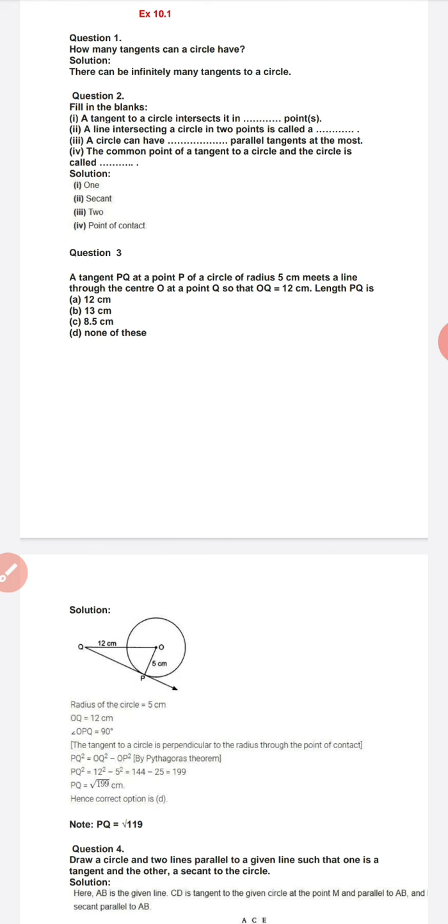It's simple but sometimes an objective is asked in this exercise. Now exercise 10.1, question number first: How many tangents can a circle have? If you have one circle, where can it be?